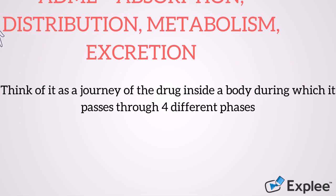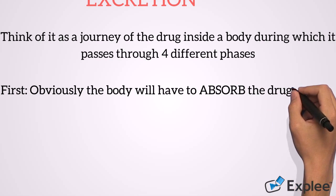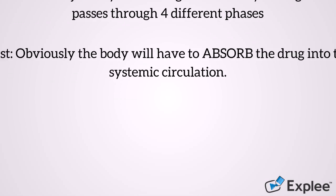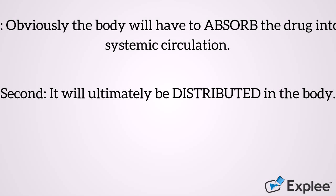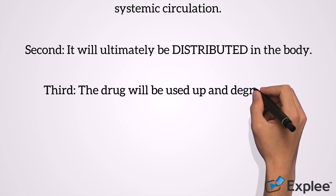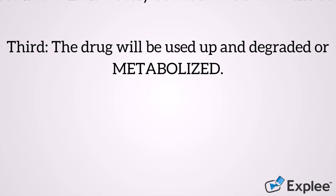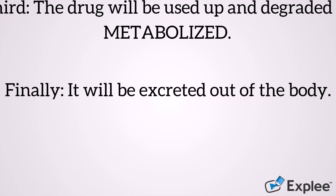Think of it as a journey of the drug inside the body, during which it passes through four different phases. First, the body will absorb the drug into the systemic circulation. Second, it will ultimately be distributed in the body. Third, the drug will be used up and degraded, or metabolized. Finally, it will be excreted out of the body.